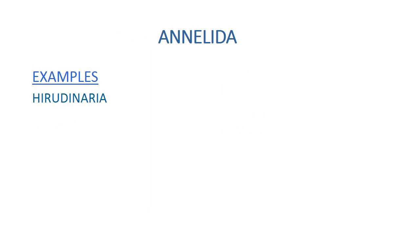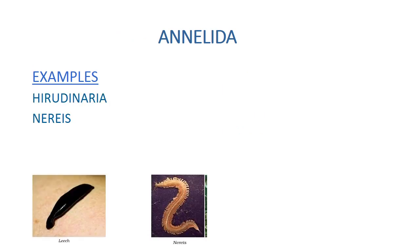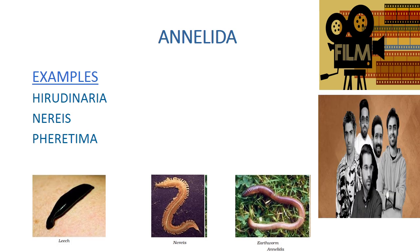The next phylum is Annelida. The examples are Hirudinaria, Nereis, and Pheretima, also known as Earthworm. Just remember heroes and movies — the trick is 'Hero New Film': from 'Hero' it's Hirudinaria, from 'New' it's Nereis, and from 'Film' it's Pheretima.